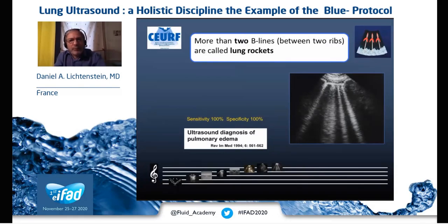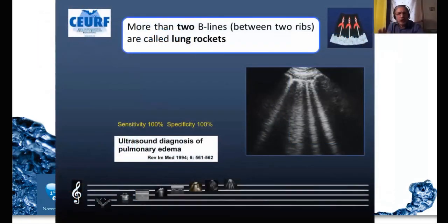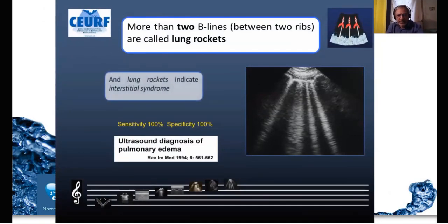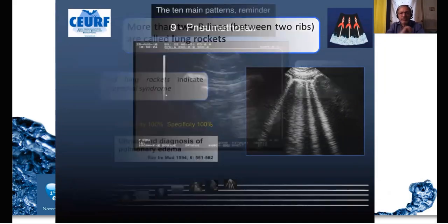From three B-lines — more than two — we call this pattern lung rockets, and lung rockets indicate interstitial syndrome.